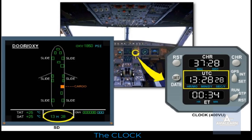Clock. A single electrical clock gives the Universal Time Coordinated, UTC, and date as time references for the crew and all peripheral systems. The other functions available are Elapsed Time, ET, and Chronometer, CHR. The clock can be synchronized with satellite GPS time. The time is also displayed at the bottom of the SD.